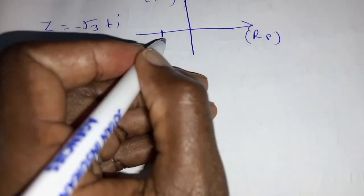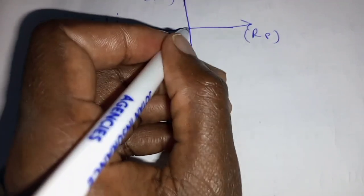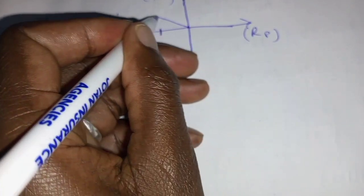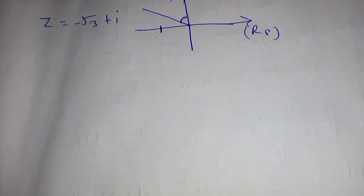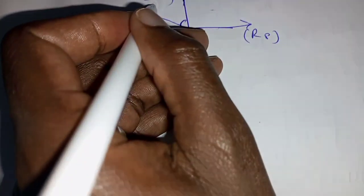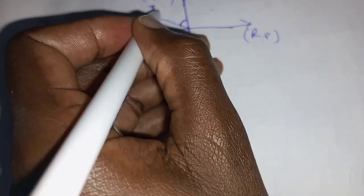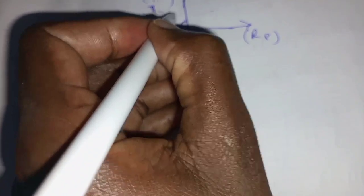So our argument will be this angle in the second quadrant, and we are going to use the fact that it's negative, so the result here will be π minus our argument which we want to obtain.